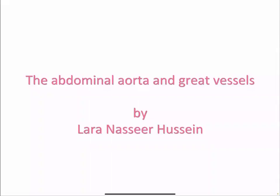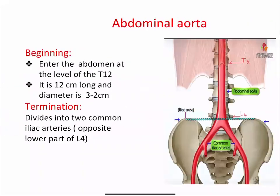This is about the abdominal aorta and the great vessels. The abdominal aorta begins inside the abdomen at the level of T12. It is 12 cm in length and 2 to 3 cm in diameter, and terminates by dividing into two common iliac arteries opposite the lower part of L4. It starts at the level of T12 and ends at the level of L4.